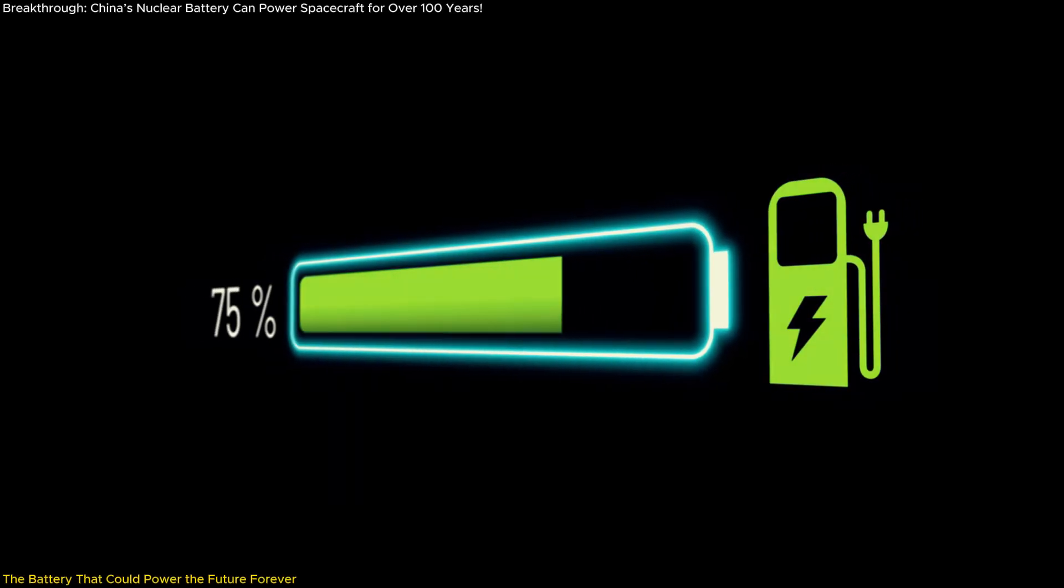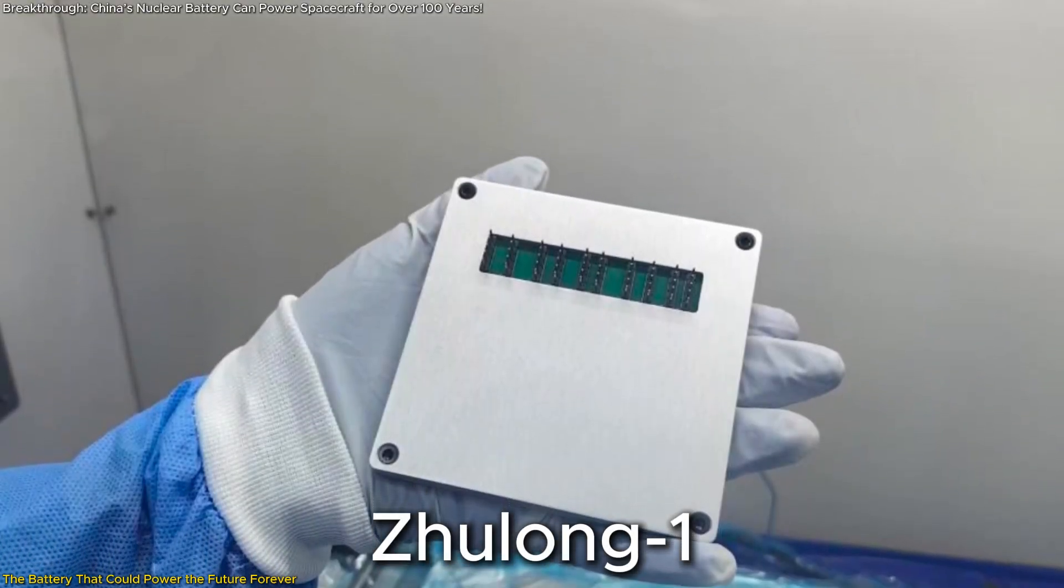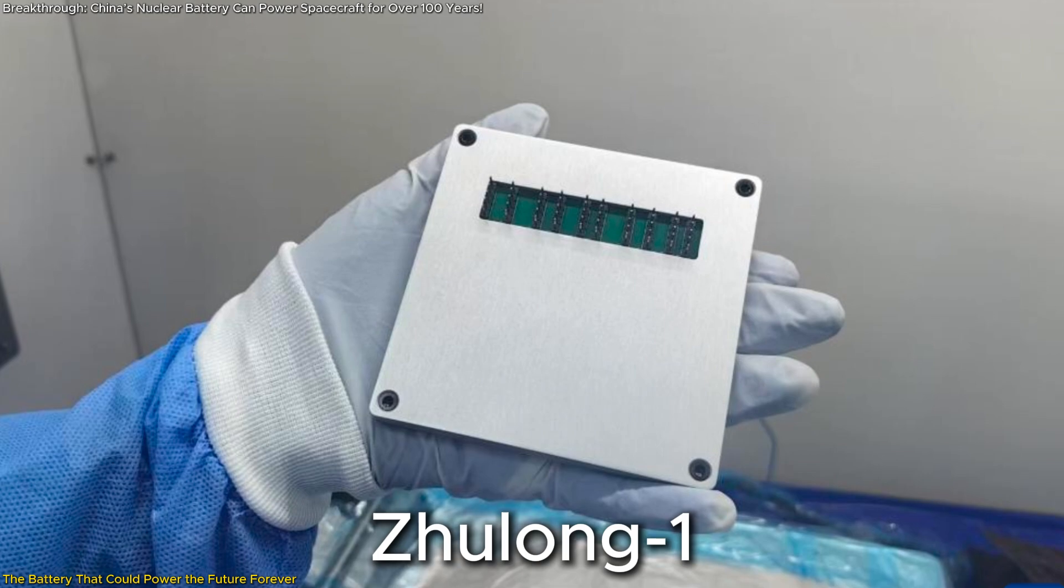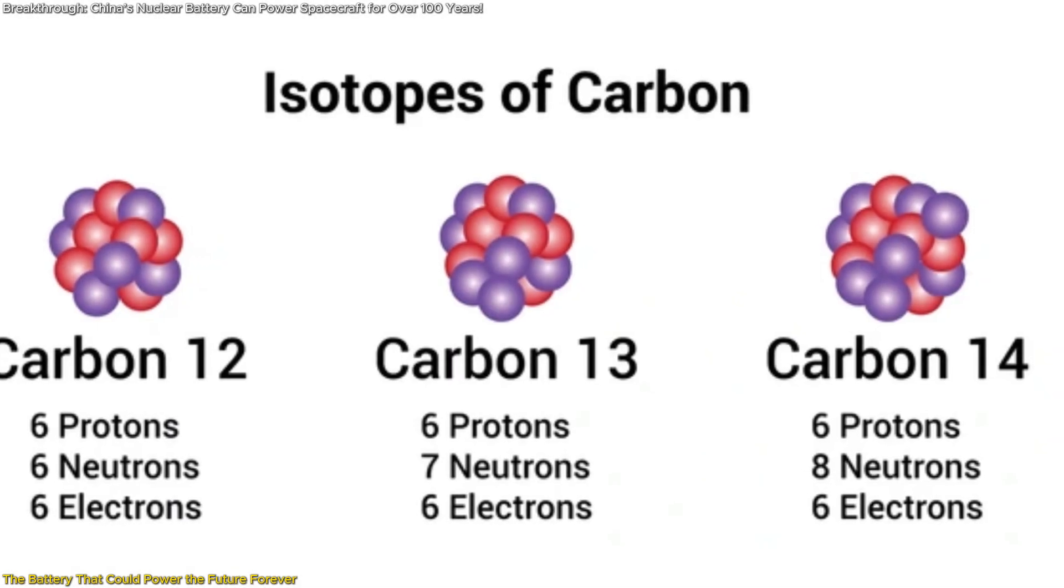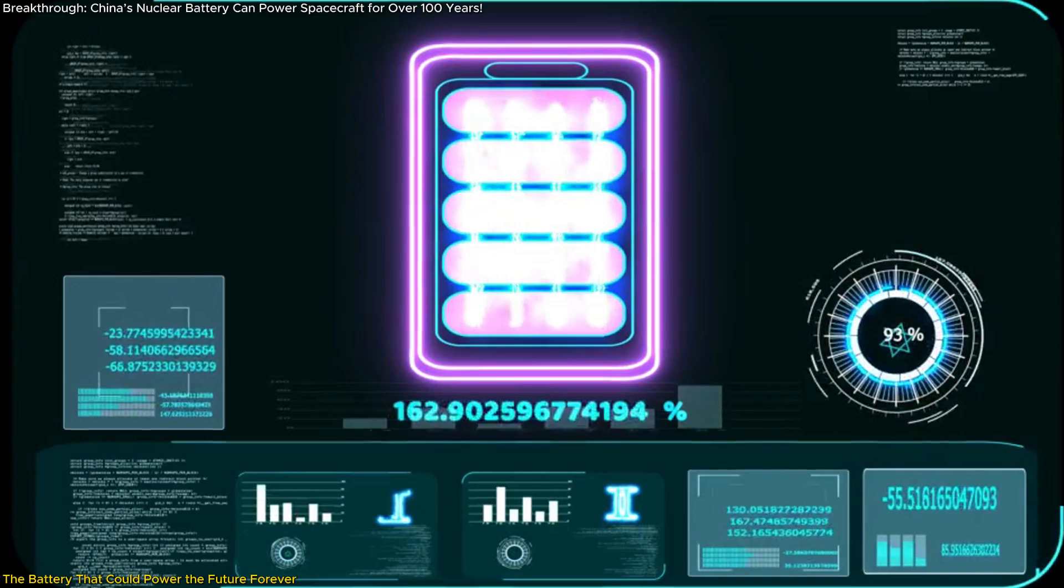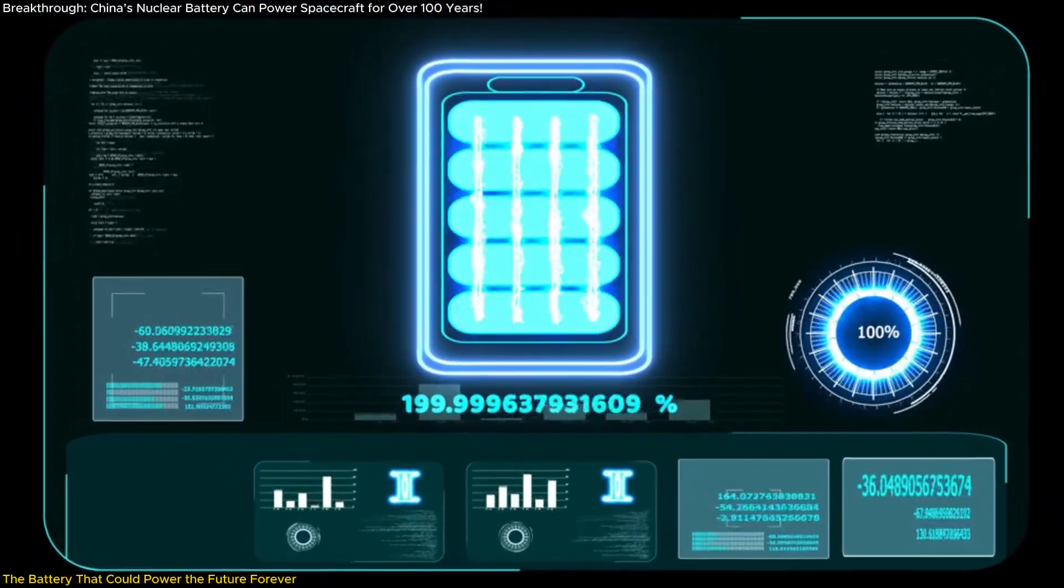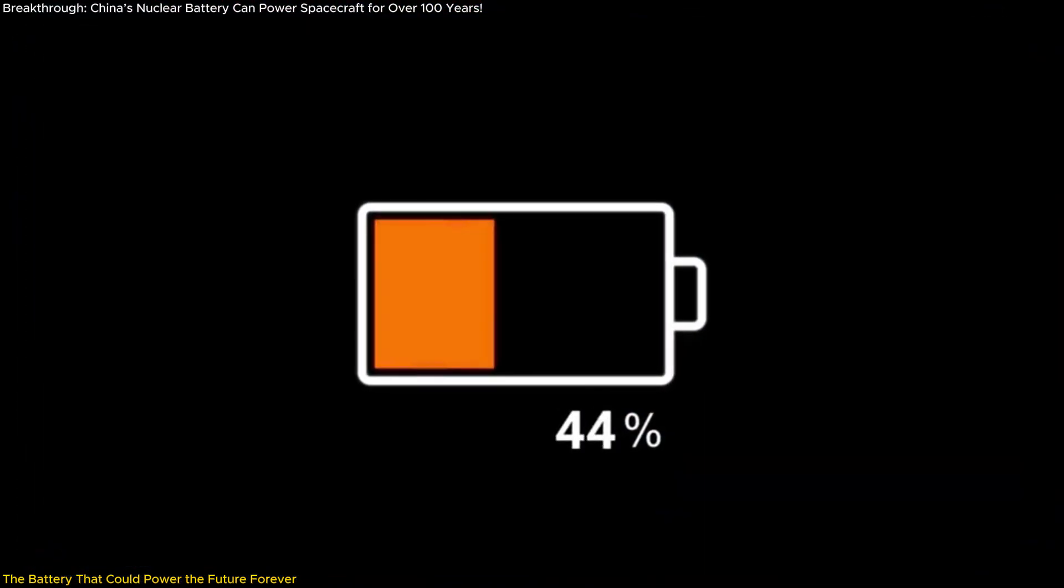A battery that never runs out. Zhulong-1 is making that a reality. Developed in China, this groundbreaking nuclear battery, powered by carbon-14, generates energy with an ultra-long lifespan, eliminating the need for recharging.